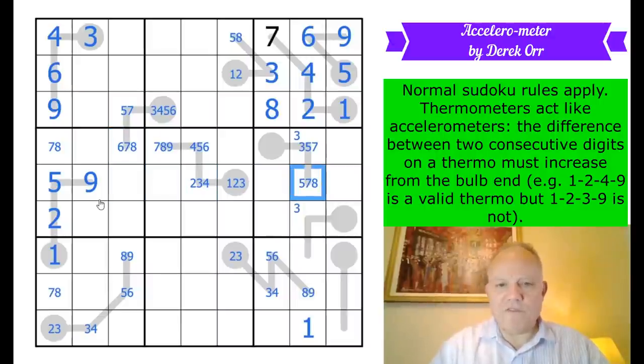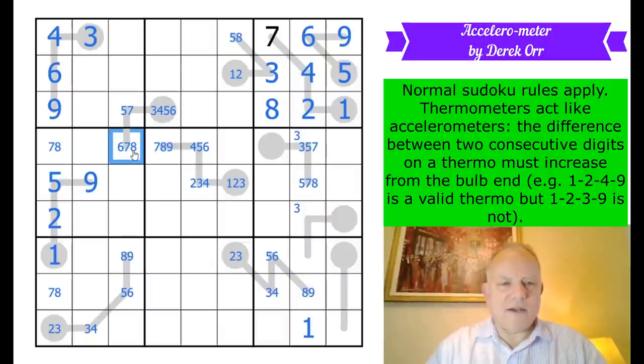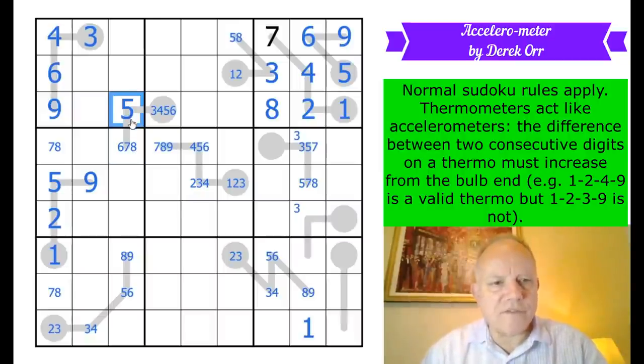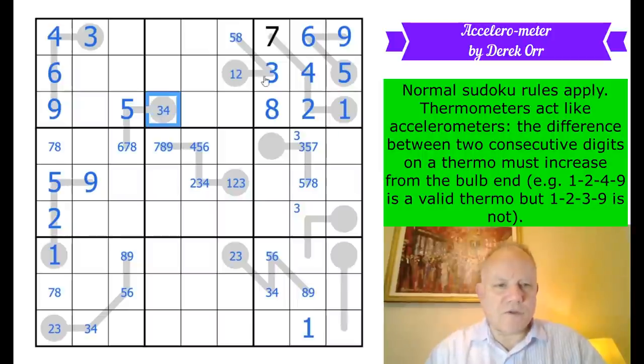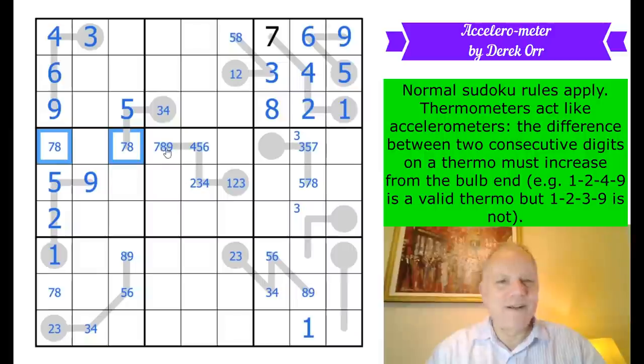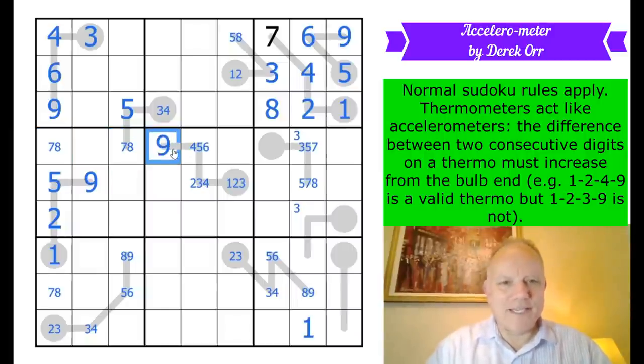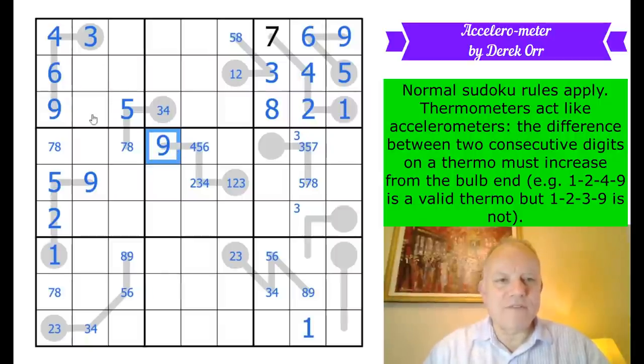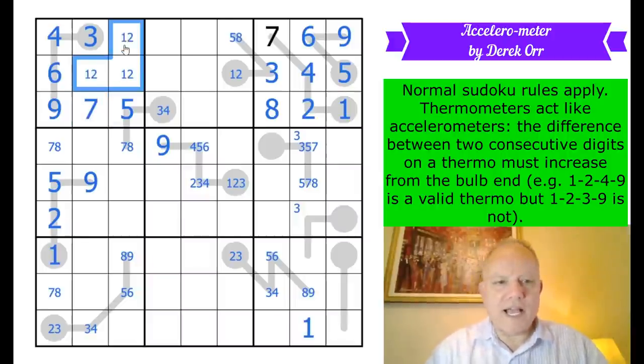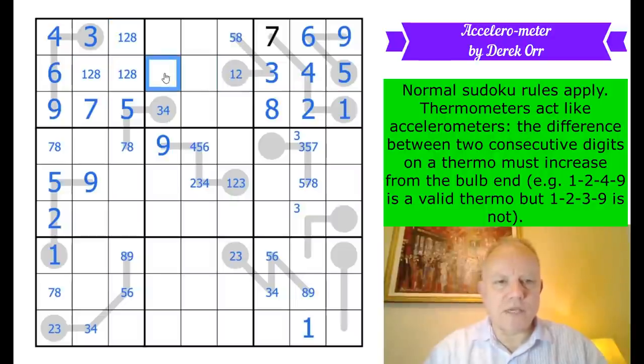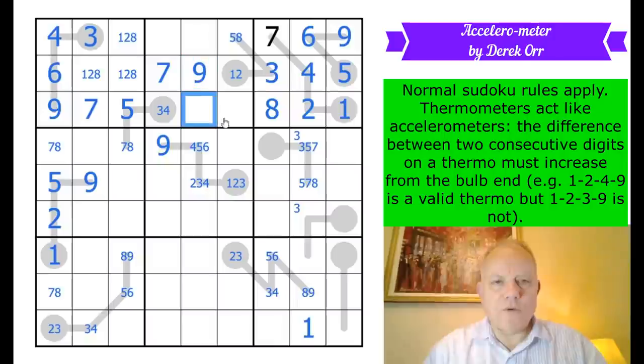9 comes off there and off there. This one, that can't be 7 anymore because then the jump to the final cell could only be 1. So that's a 5. This now is obviously 3 or 4. This can't be 6 anymore. So now we've got a 7, 8 pair in row 4. This puzzle is not going the way I expected ever. So clever. That's a naked single, 7. Got 1, 2 and 8 to go there. That's a triple in the row. So 7 and 9 go in there. Ordinary Sudoku. I'm a bit more comfortable with that rather than accelerometers.